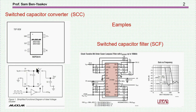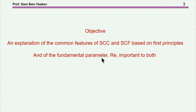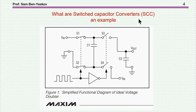We are concerned here with two technologies: switched capacitor converters and switched capacitor filters. Here is an IC unit with its internal structure or simplified circuit diagram, and here is a switched capacitor filter already programmed to behave like a very sharp low-pass filter. I'm going to discuss the common feature of these two technologies using first principles — developing the relationships from the basis rather than relying on available equations — and also discuss the importance of the equivalent resistance Re in both cases.